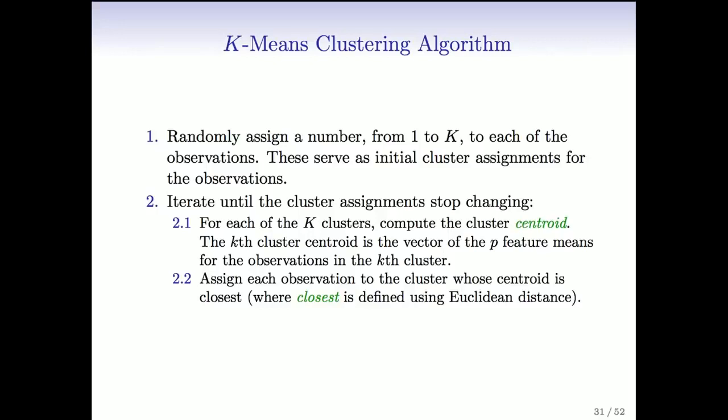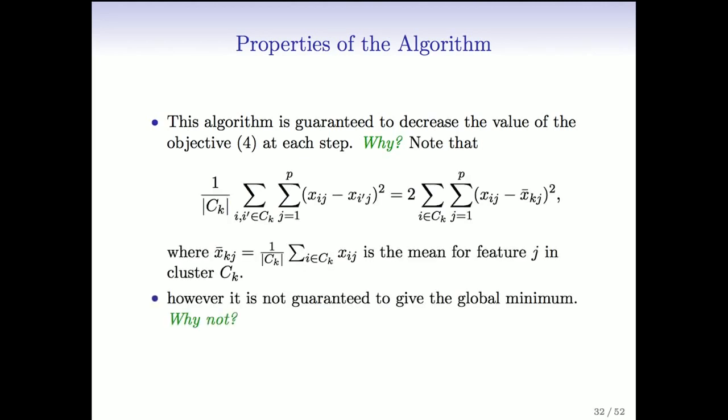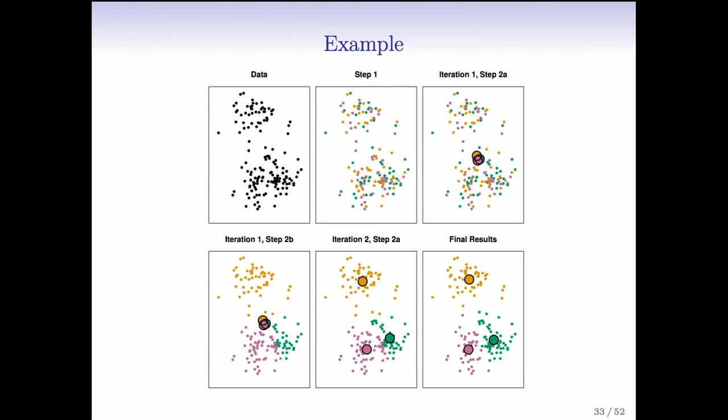Let me show an example. Here's an example, actually the same example we had before. Here's our data. Again, it's unlabeled data. We've chosen k equals 3. In the first step, we're going to assign points at random to clusters. We've indicated these by the colors. Each point is assigned to a different color. You'll see the assignment, the grouping is not very good yet. We're thinking that this is one group and this is another group, but we're nowhere near that clustering at this point.